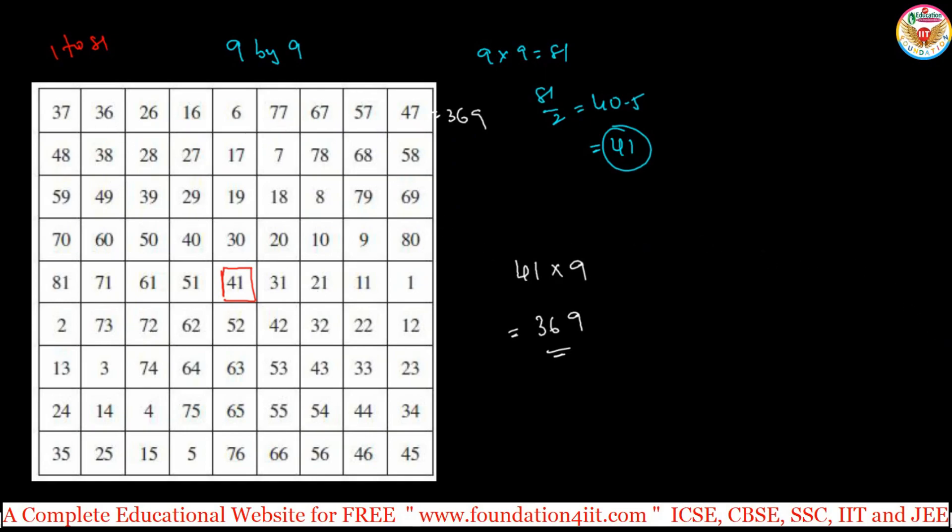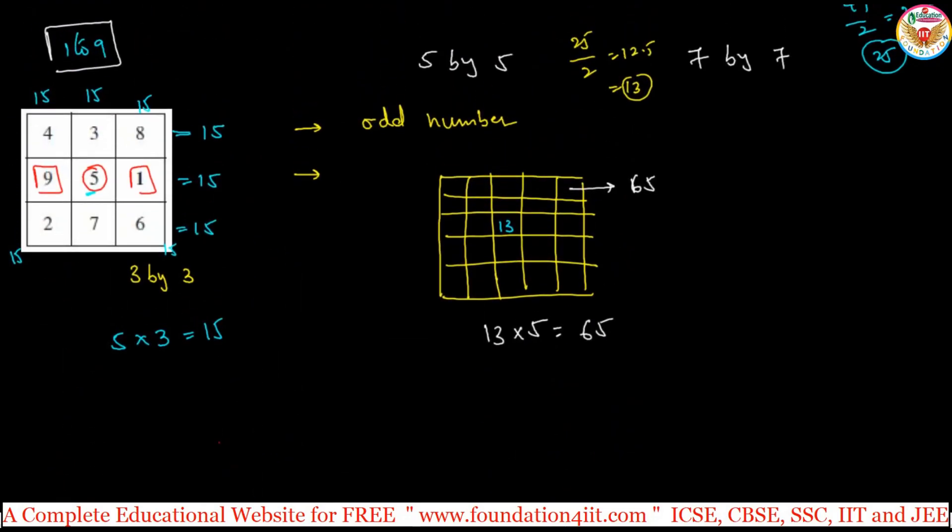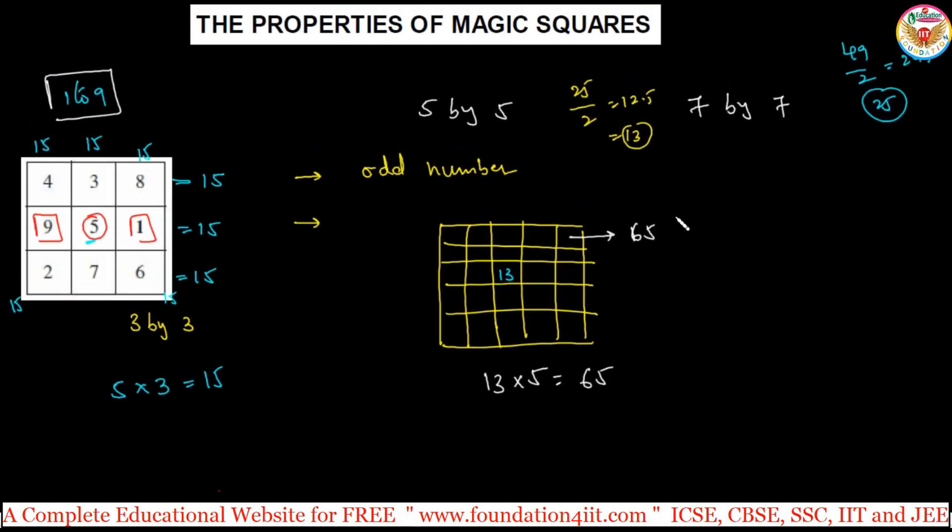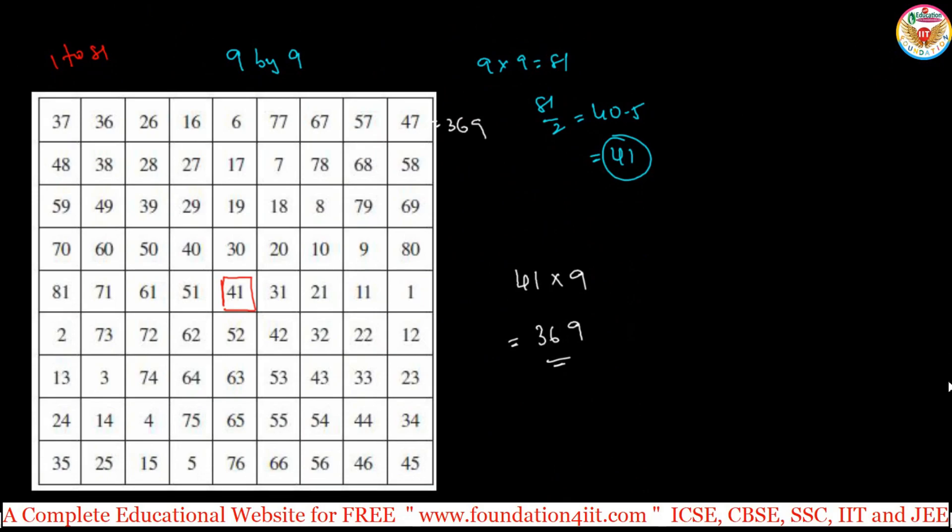This is already prepared, but I will tell you how to prepare any rows, any columns, like odd number, 5 by 5 order, 7 rows, 7 columns, 9 rows, 9 columns, even 11 rows, 11 columns. Without taking much time, just how simple we have to prepare the magic squares. This is already done, 9 rows, 9 columns.